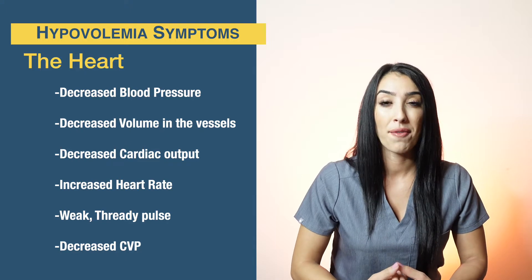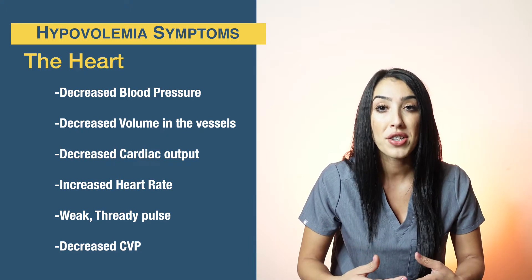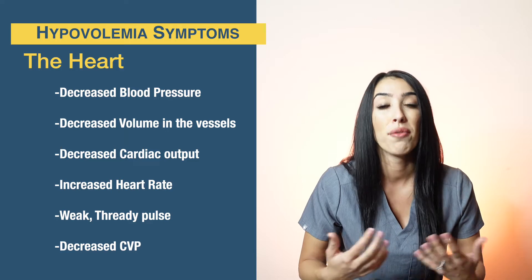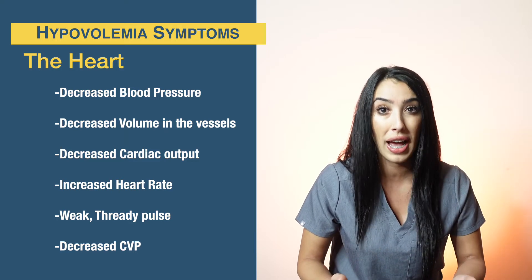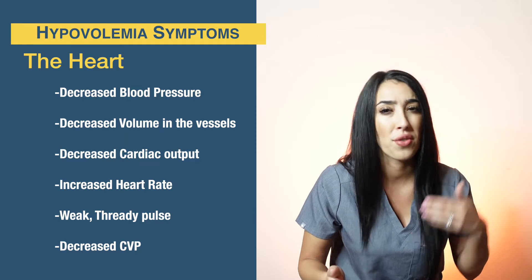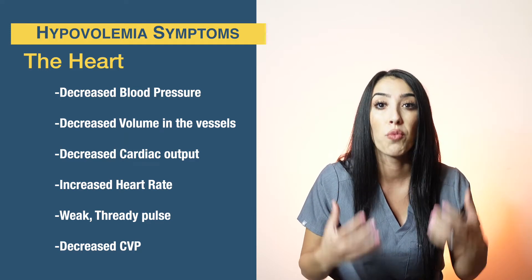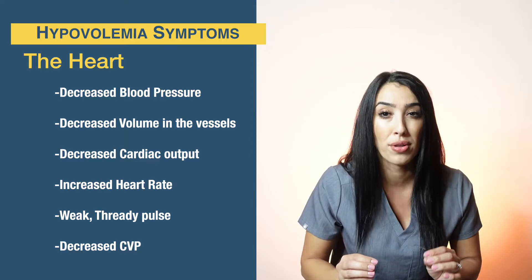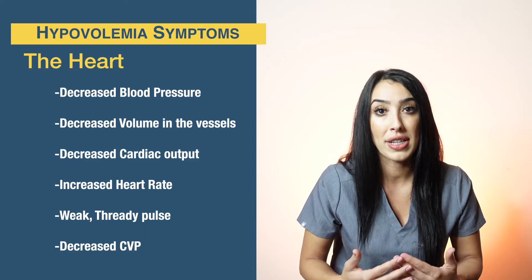Signs and symptoms of hypovolemia include decreased blood pressure. These patients will have significant hypotension due to decreased volume in the vessels, which decreases pressure and overall cardiac output. The heart tries to compensate for that low blood pressure by working harder, leading to increased heart rate and a weak, thready pulse. There will also be decreased central venous pressure, or CVP, which measures the amount of preload in the right atrium. Due to low fluid volume, these patients will have less fluid in the right atrium, leading to low central venous pressures.